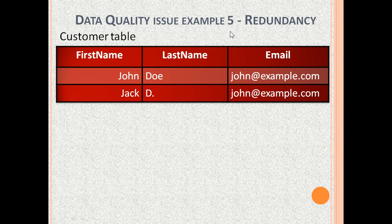The fifth data quality issue is redundancy. Here is a customer table with columns: first name, last name and email. The second row is a duplicate of the first row because the email addresses are the same.